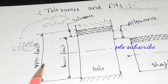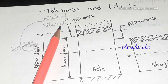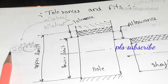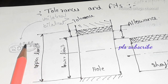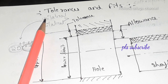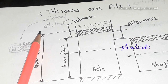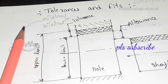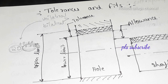The difference between the upper limit and the lower limit is either unilateral or bilateral. In the unilateral system, tolerance is allowed on one side. In the bilateral system, tolerance is allowed on both sides, and the same elements or types of fits are used.